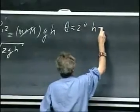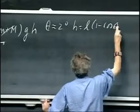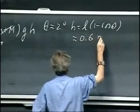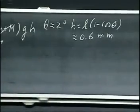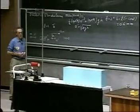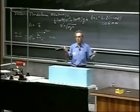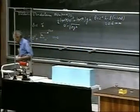Then h, which is L times (1 - cos theta), is only 0.6 millimeters for the dimensions that I have chosen here, for a length of one meter. And that's it. You can't even see it. It's invisible, let alone that you can measure it to any degree of accuracy. So what are we going to do now?